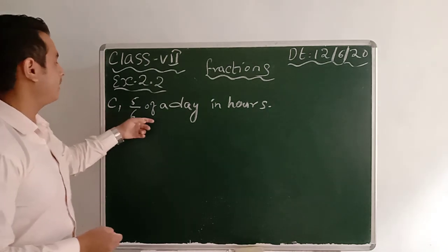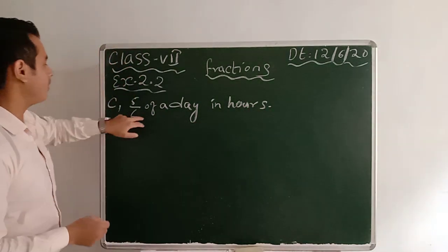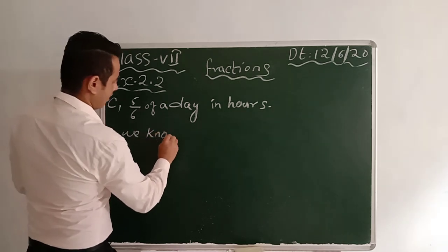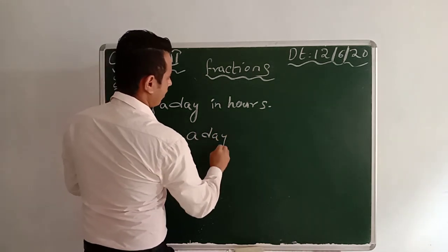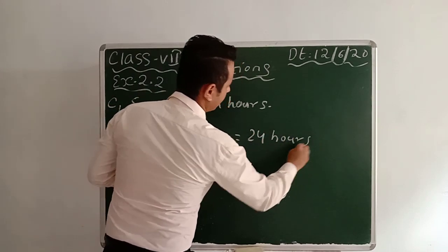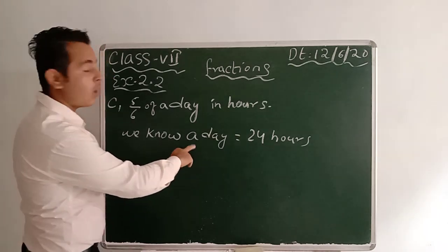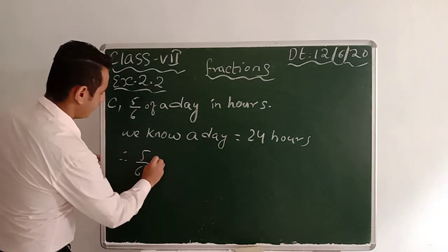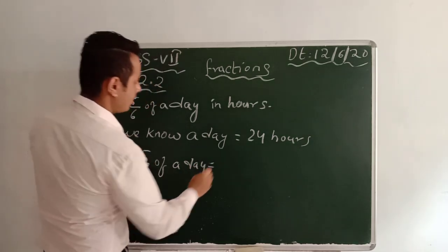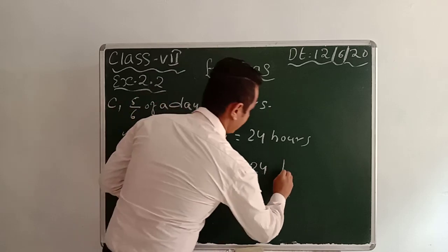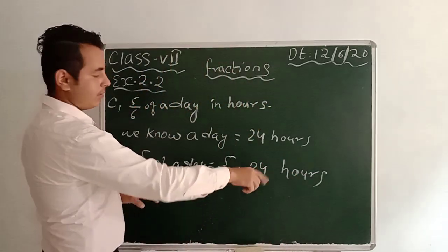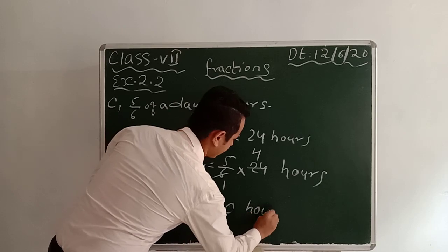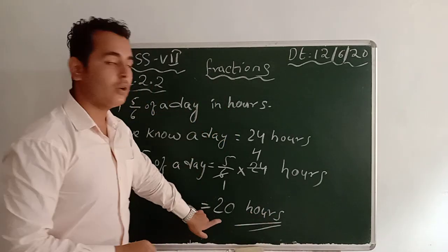Here is number C: 5/6 of a day in hours. We should convert this — we know a day equals 24 hours. So 5/6 of a day equals 5/6 into 24 hours. Cut 6 and 24: 6 fours are 24. So 5 fours are 20 hours. 5/6 of a day means 20 hours.